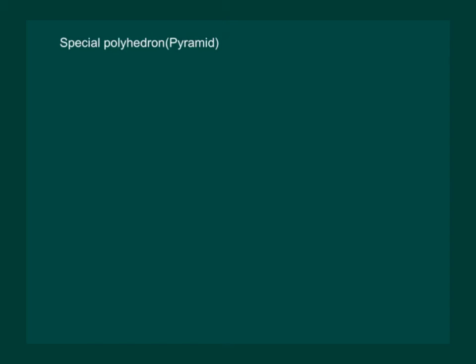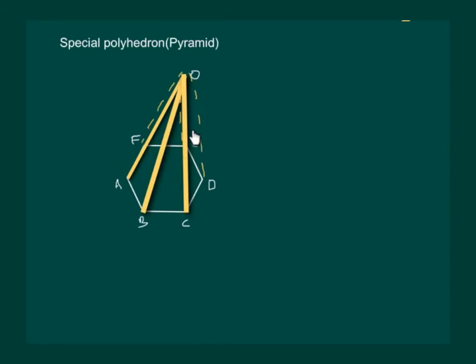Let us now define another special polyhedron called a pyramid. Let us consider a hexagon A, B, C, D, E and F, and let us consider a point O not lying on the hexagon. Join A to O, B to O, C to O. Similarly, D to O, E to O and F to O